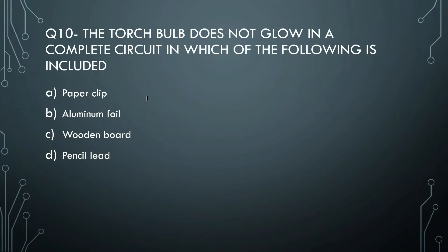Next question: the torch bulb does not glow in a complete circuit - which of the following material is included? The options are paper clip, aluminum foil, wooden board, or pencil lead. The right answer is pencil lead, because pencil lead is made of graphite, which is carbon - and graphite is a conductor. So putting pencil lead in the circuit allows the bulb to glow.